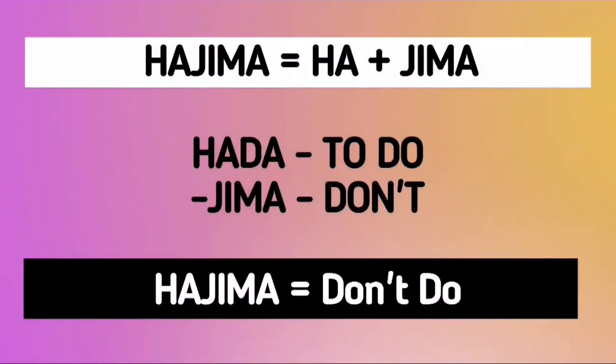Here is a little bit of information about the origin of the word Hajima. The word Hajima is a combination of the word Hada and Chima. Hada means to do, and Chima is the suffix used to negate an action. In this case, the action or verb that it negates is Hada, or to do. Therefore, Hajima is the same as saying don't do it.